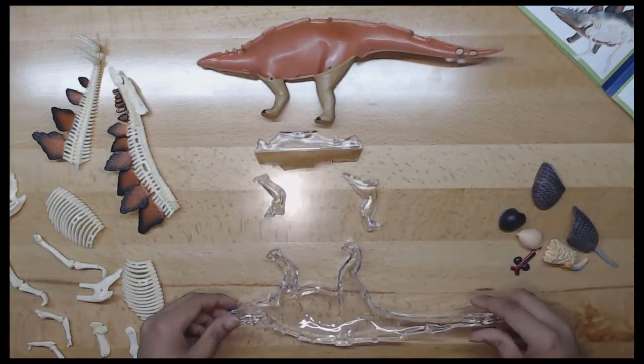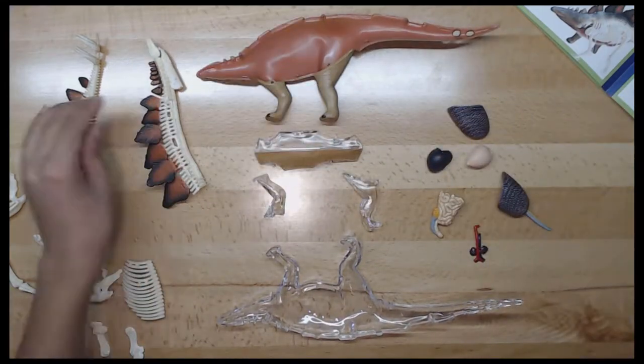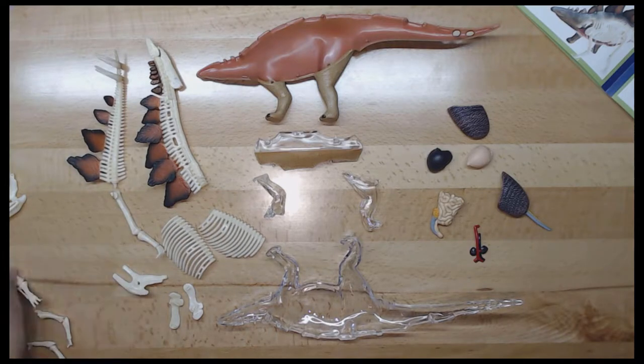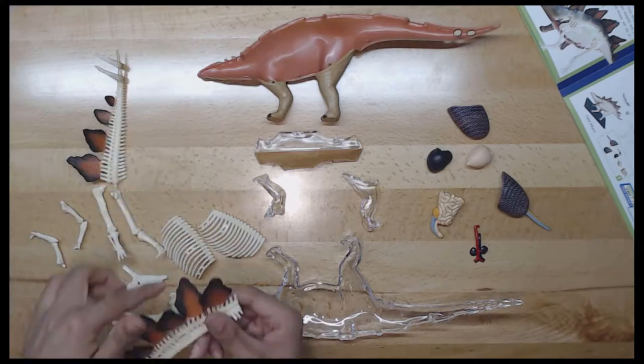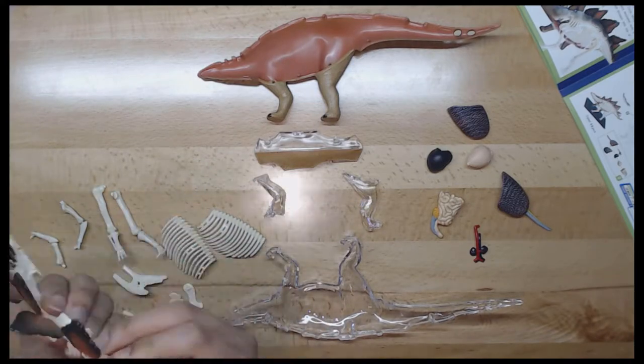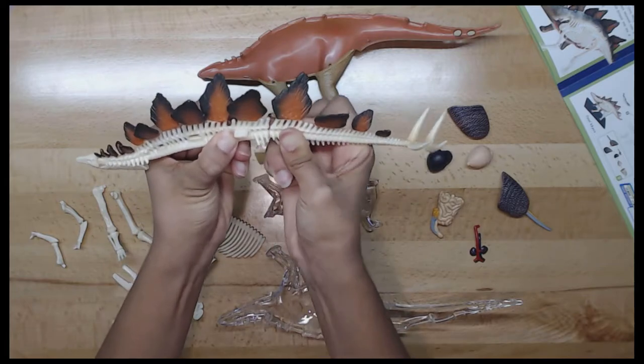Next is the eyes. The eyes of Stegosaurus were on the sides of its head, which helped it to scan for any incoming predators in the surrounding area. Paleontologists believe Stegosaurus may have had poor eyesight. That is why it had an excellent sense of smell.